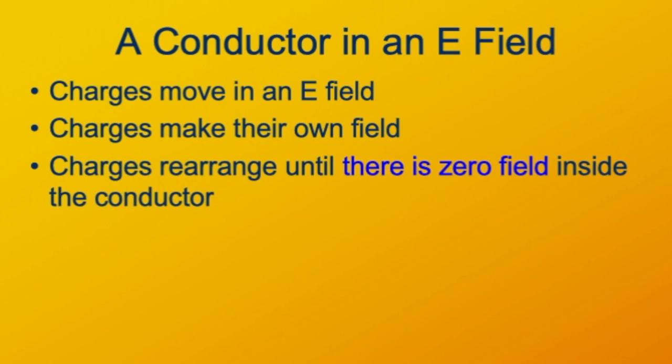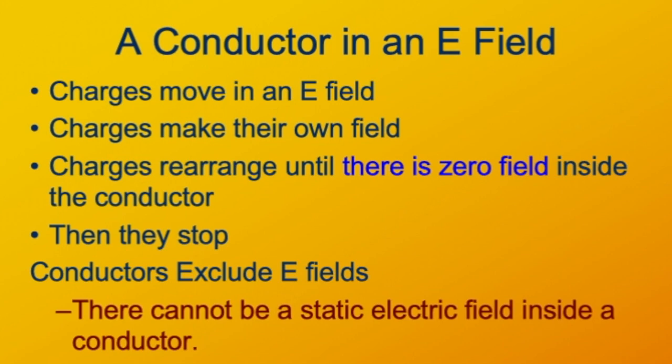The charges rearrange until there's zero field inside the conductor. With negative charges toward the positive external charge and positive charges away, the internal field exactly cancels the external field. The charges move until the field cancels and then stops. Conductors exclude electric fields — you cannot have a static electric field inside an electrical conductor.